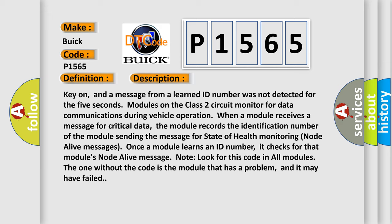Once a module learns an ID number, it checks for that module's node alive message. Look for this code in all modules. The one without the code is the module that has a problem, and it may have failed.